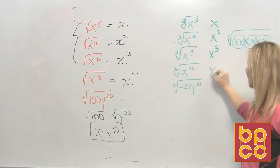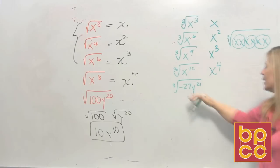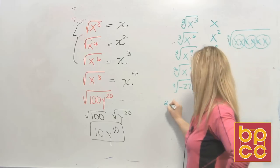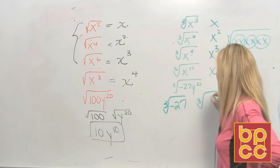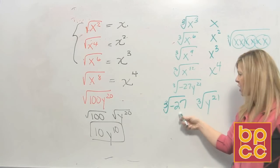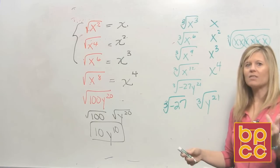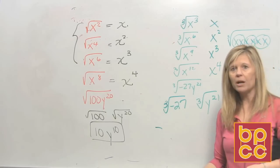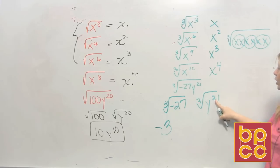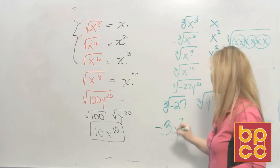What's the cube root of x to the twelfth? That's x to the fourth. Check yourself: x to the fourth times x to the fourth times x to the fourth is x to the twelfth. In this last example, we're cube rooting a number and a variable — they're connected by multiplication, so we break it into two symbols. It's very important when working with cube roots to write the index of three. The number negative 27 is on the perfect cube list — a negative times a negative times a negative is negative, and three times three times three is 27, so the cube root is negative 3. For the variable, divide the exponent by three: 21 divided by three is seven, so y to the seventh.